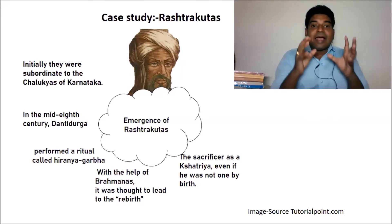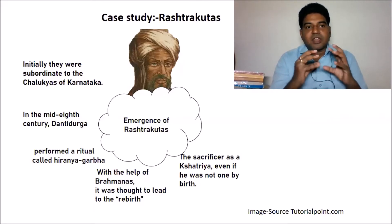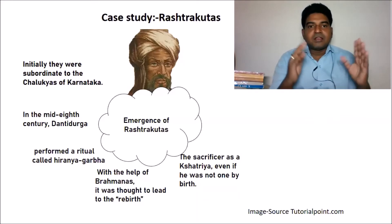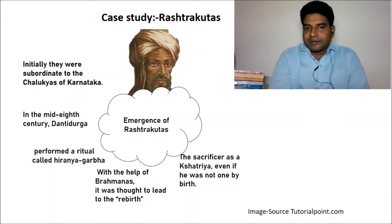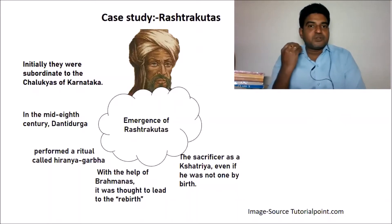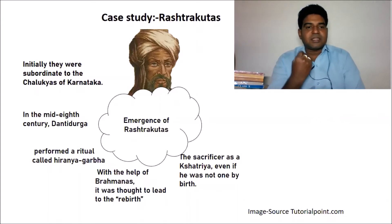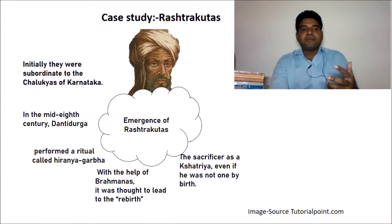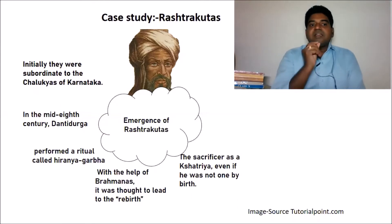Danti Durga was a very powerful subordinate to the Chalukyas of Karnataka. He wanted to declare himself as an independent ruler, but Danti Durga was not a Kshatriya by birth. We have the Chaturvarna system written in the Manu Dharma Shastra — Brahmins, Kshatriyas, Vaishyas, and Shudras — which over time came to be considered as birth-based castes.